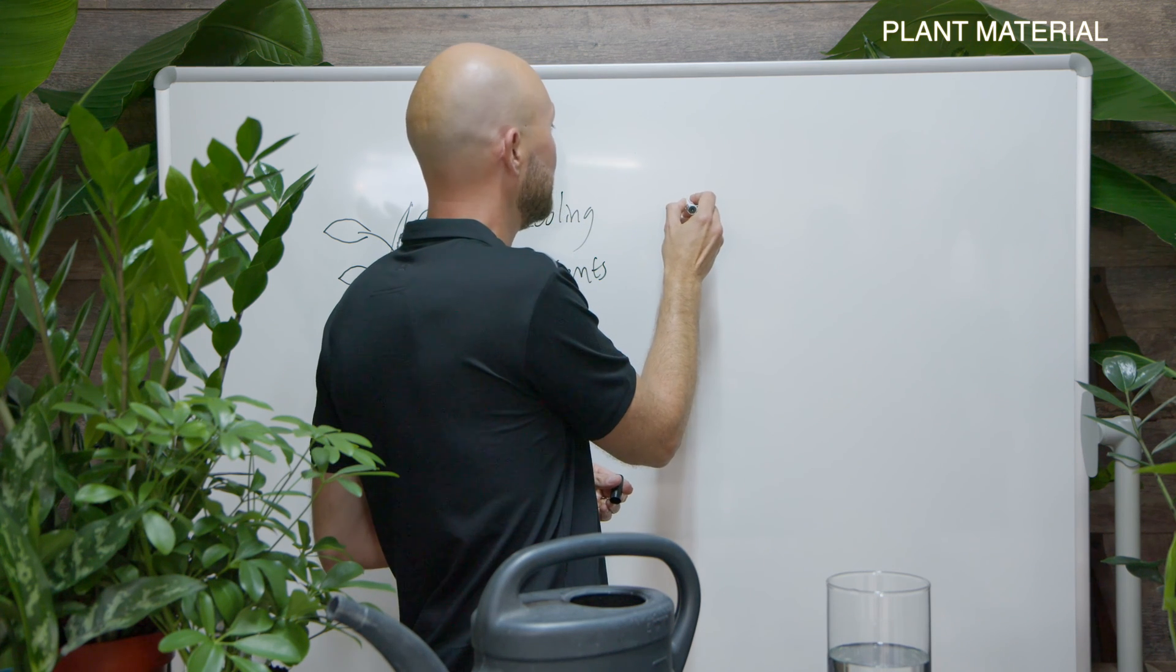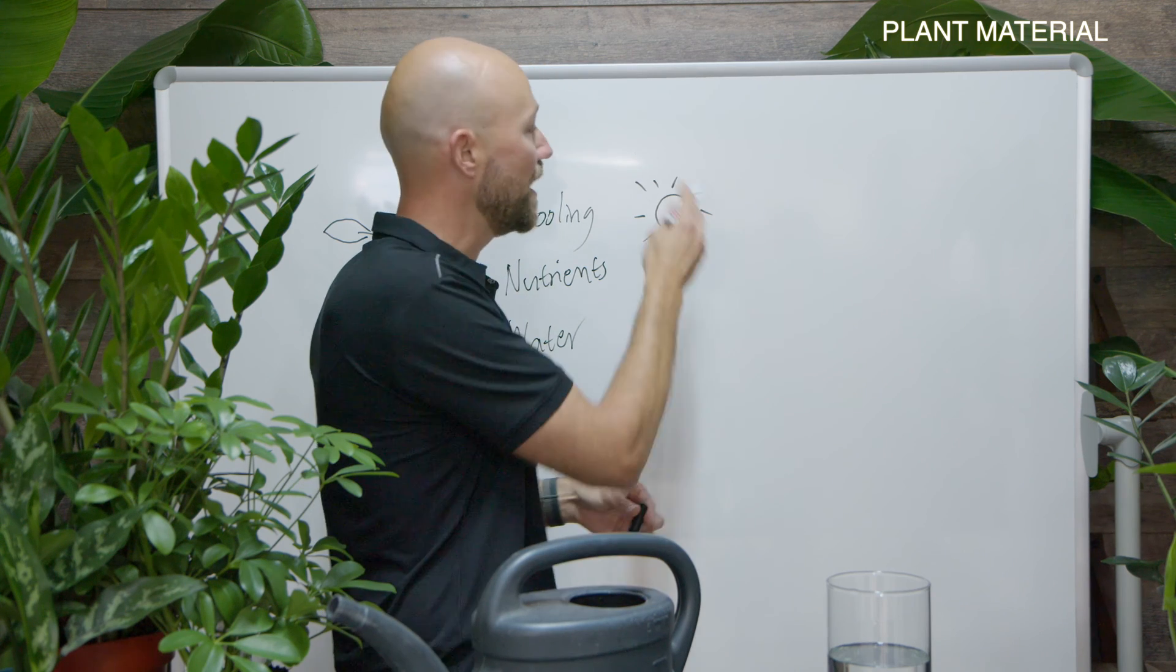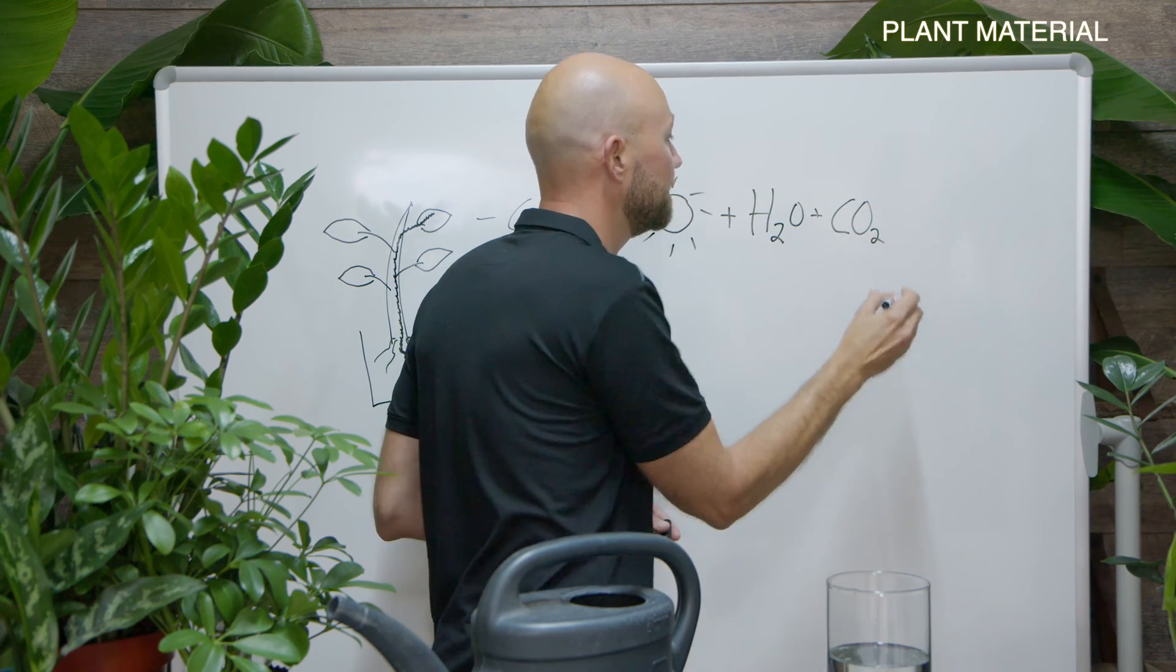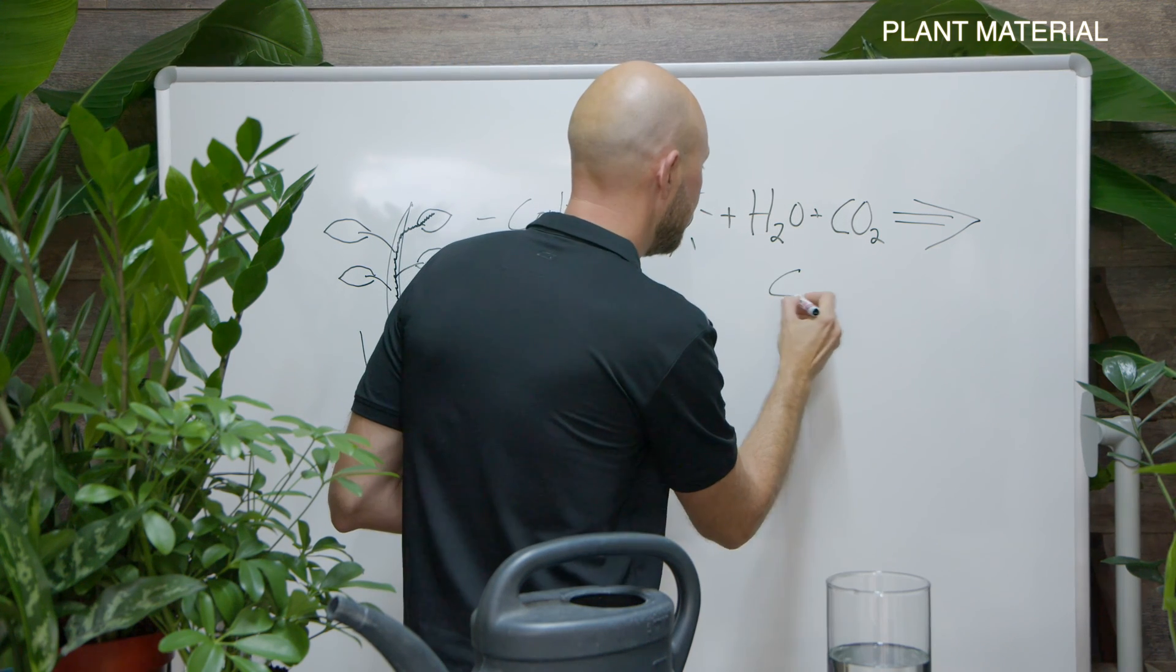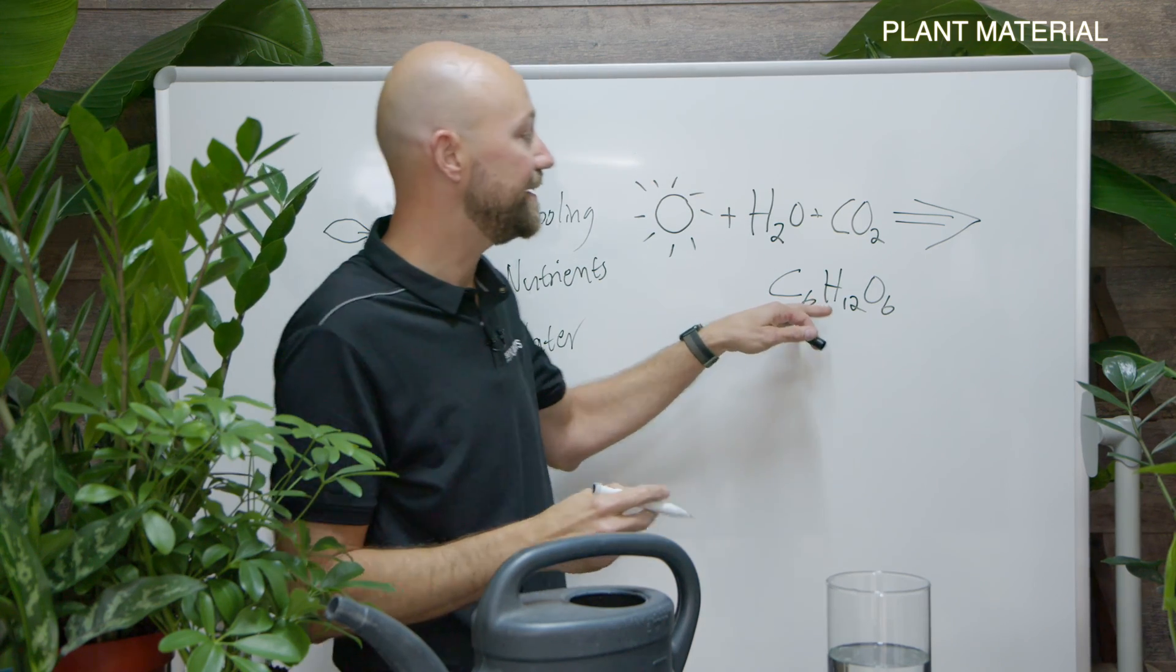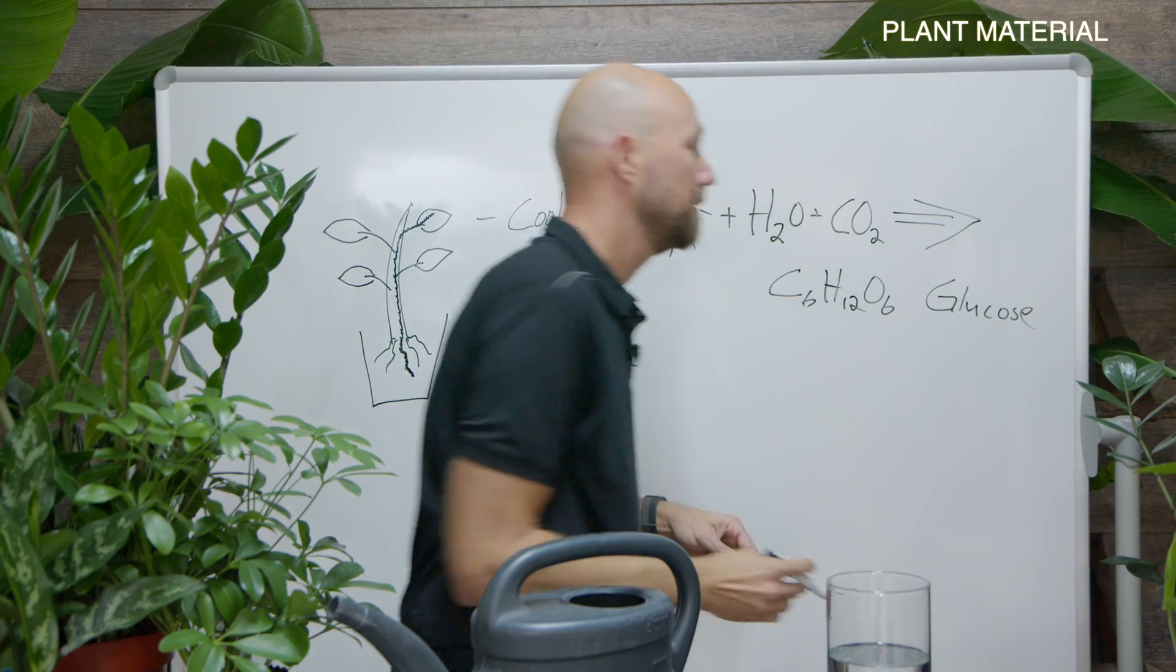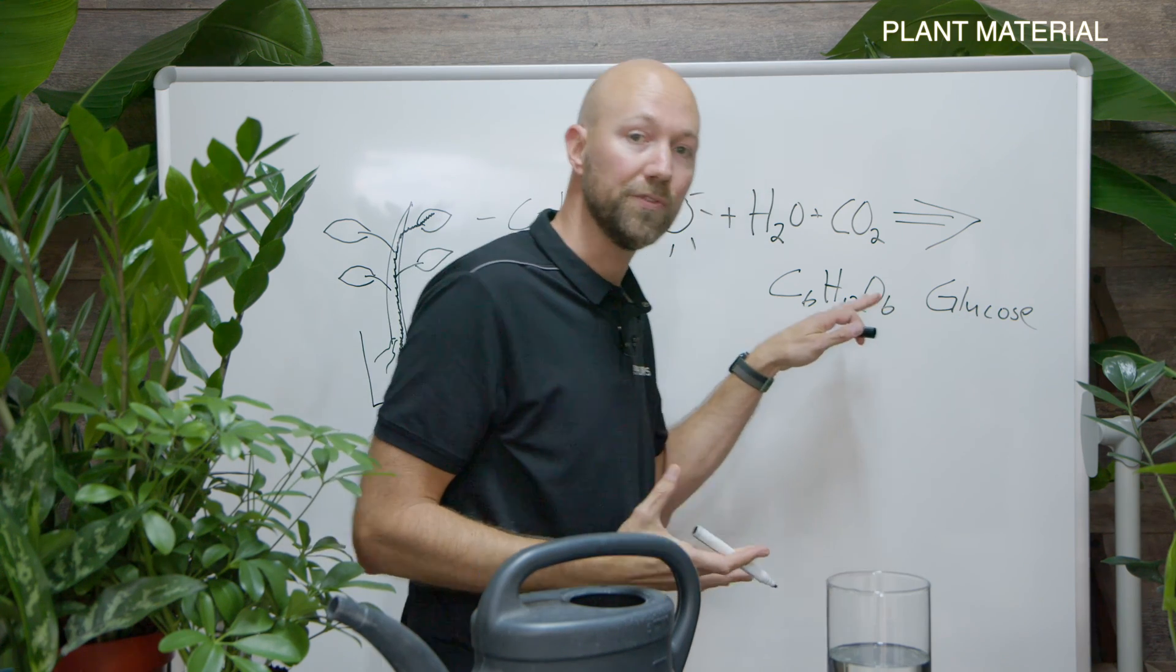What we need to create the food for the plant is sunlight or energy. Now energy plus water plus carbon dioxide will lead to something called C6H12O6. And what is this? Well this is the food for the plant. This is glucose. Another way of saying sugar.